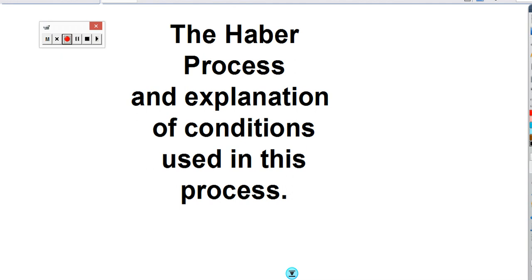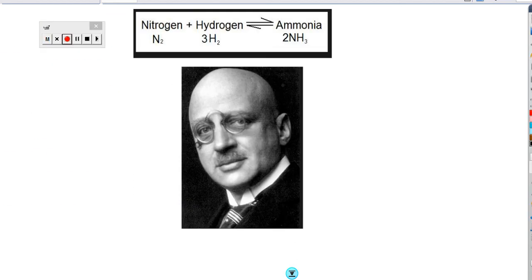In this video we're going to look at the Haber process and the most important explanation of the conditions used in it. The Haber process is the making of ammonia, chemical formula NH3, from nitrogen and hydrogen. The photograph shows Fritz Haber, the scientist who developed this process. He was originally a plumber, and his understanding of pipework and pressure were vital in solving the problem of making ammonia.